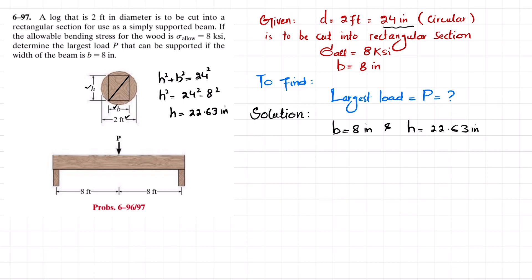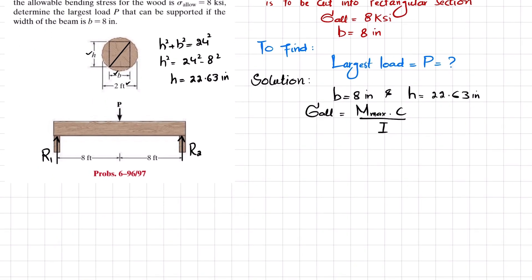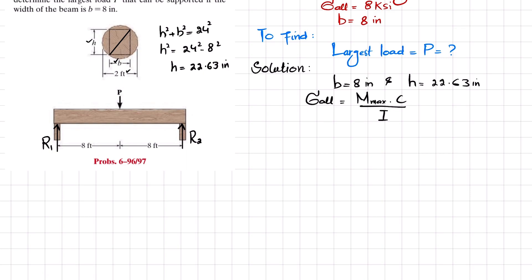If you remove this support, you will have a reaction force R1, and if you remove this support, there will be a reaction force R2. We are going to find the largest moment that can be applied because we have allowable stress equal to maximum moment times c divided by I. We do not have maximum moment yet, so we will find it using the shear force and bending moment diagram. For that we will need R1 and R2, and by symmetry R1 and R2 will each equal P/2.